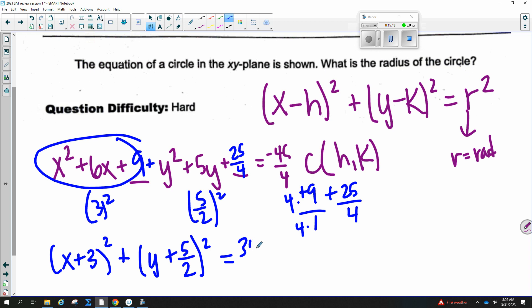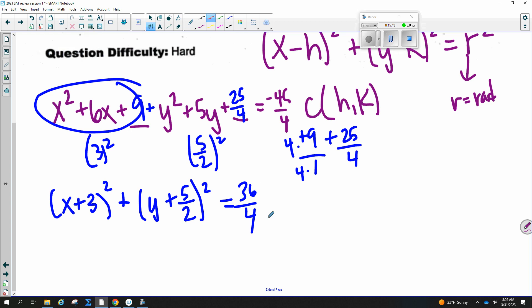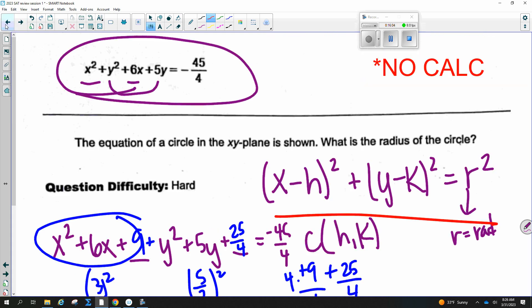And so it's asking me what is the radius of the circle, which is the square root of this. So the radius would be square root of 36 over 4, and that's 3. If it did ask for the center, the center would be negative 3, negative 5 halves. I would definitely know this formula for circles. All right, you guys, that concludes the review session for this. If you have any questions, let me know. Thanks.